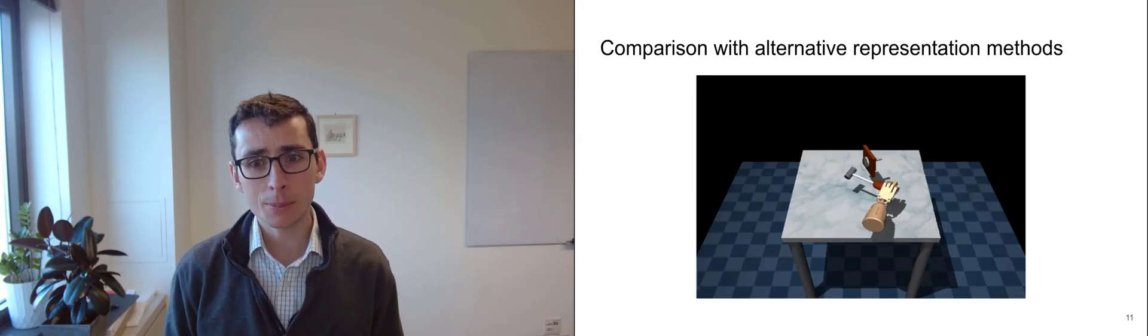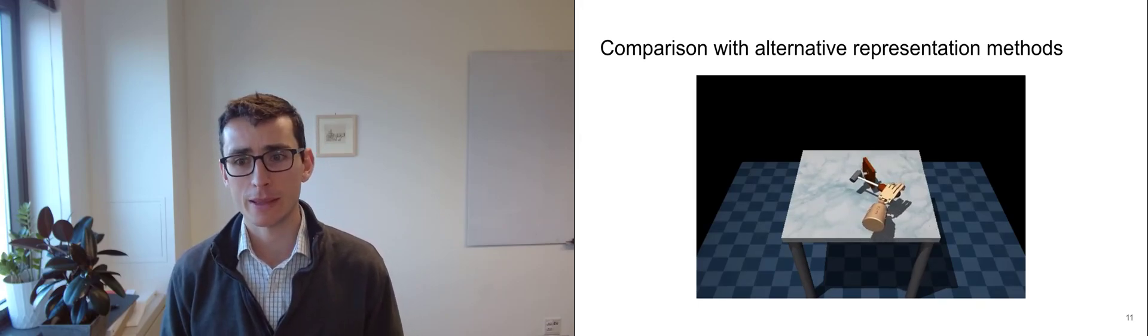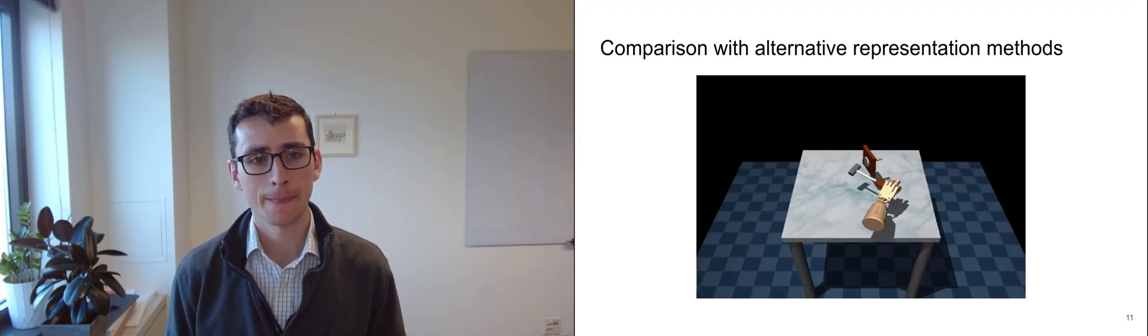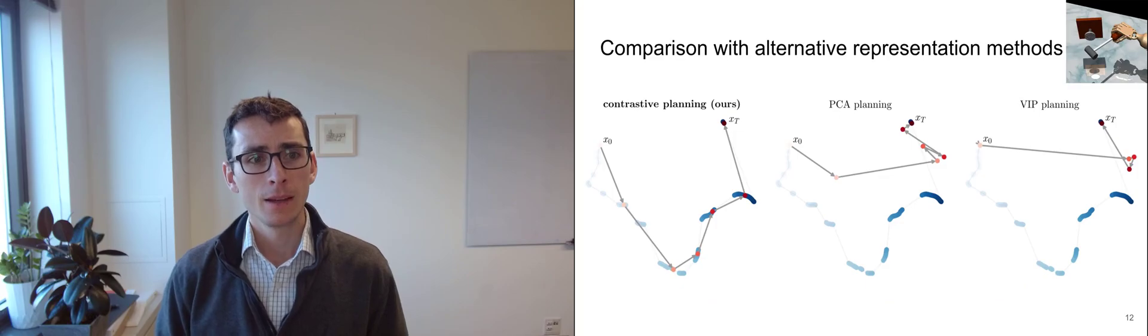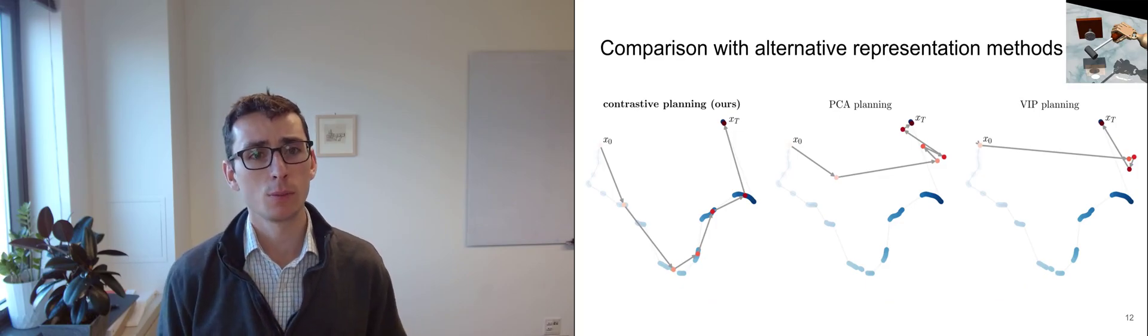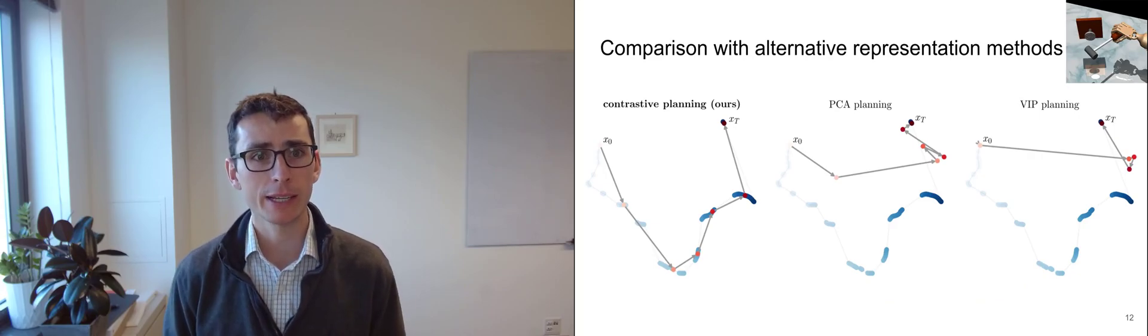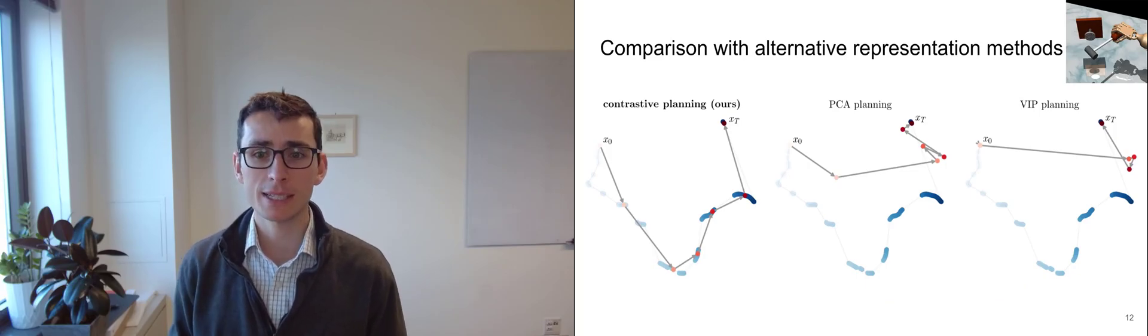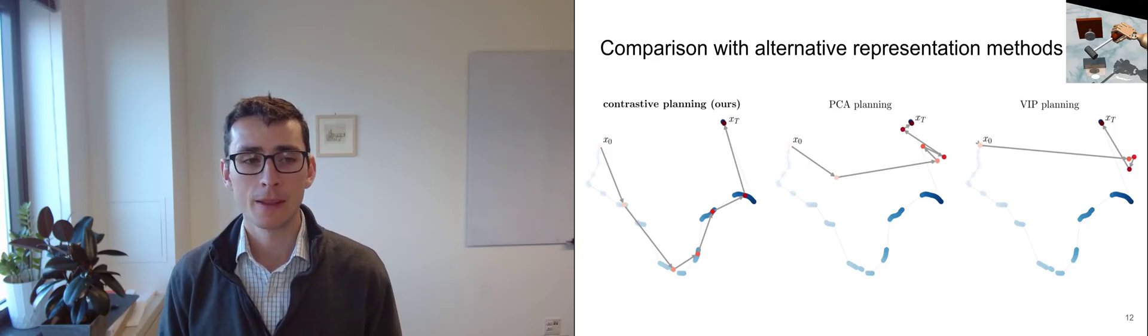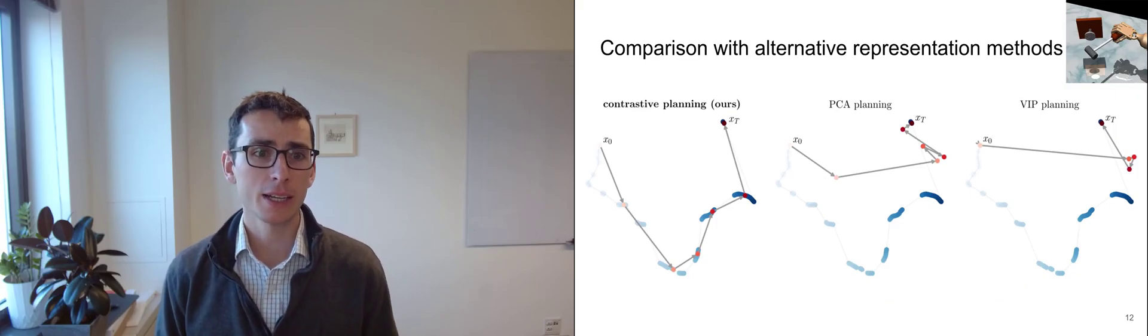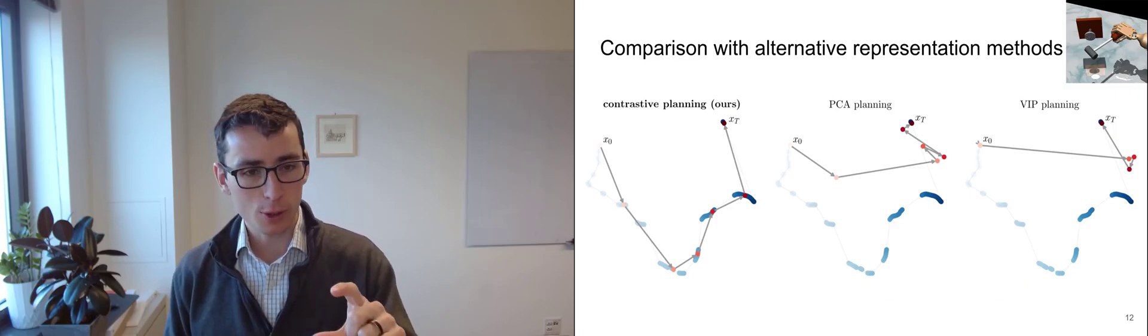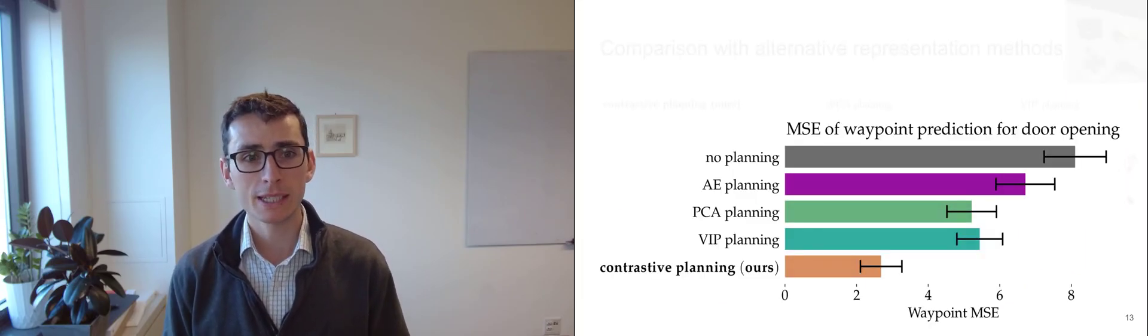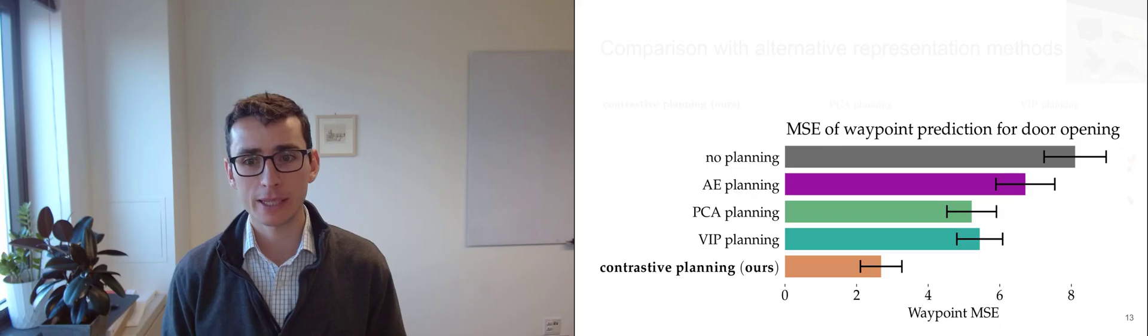We can compare these temporal contrastive learning methods to alternative representation learning methods. And in our paper, one setting where we did this was on this hammer task. When we compare our method to two alternatives, one being PCA, another being value implicit pre-training, we find that our theoretical results allow us to much more accurately predict what those intermediate states will look like. For visualization purposes here, we're just plotting a two-dimensional version of the states computed using t-SNE. And quantitatively, our method is much better at predicting these intermediate states.